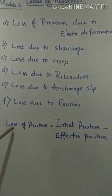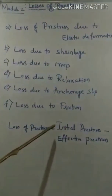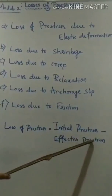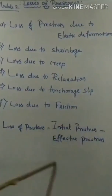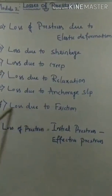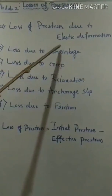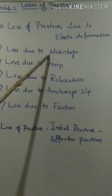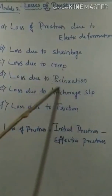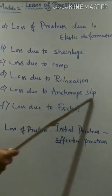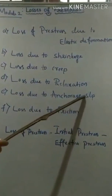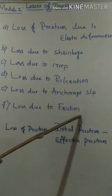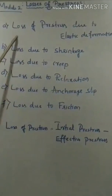Loss of pre-stress can be estimated by taking the difference between the initial pre-stress applied minus the effective pre-stress remaining in the beam. This loss occurs due to elastic deformation in the concrete, shrinkage, creep, relaxation, anchorage slip, and friction between the surrounding material and the tendon.